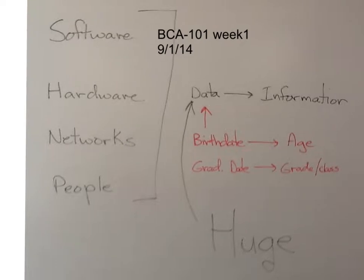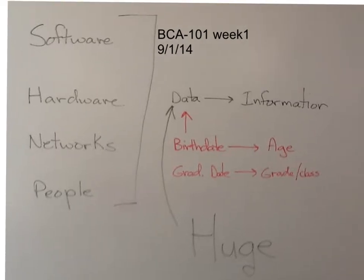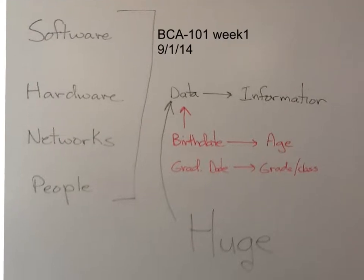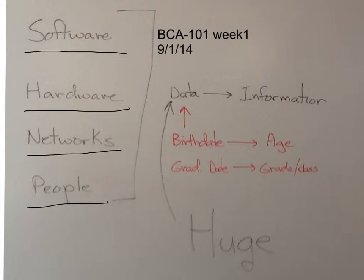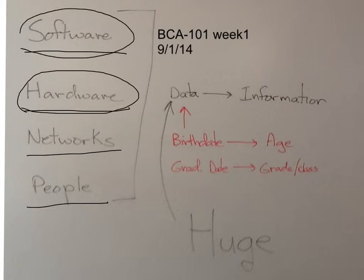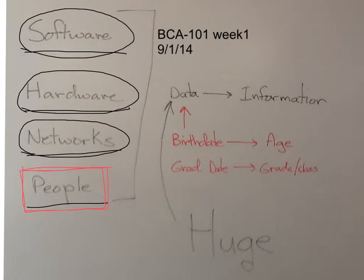We talked about a few major things. We talked about software, hardware, networks, and people. In the class, Introduction to Computers and Information Systems, it's really a combination of these things. We talk about computing devices, what makes those devices work, how we move data between locations, and probably the most important part — people. How do people use it? How does it affect people?